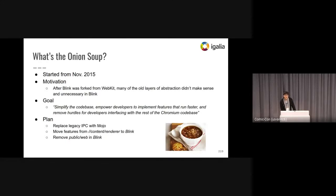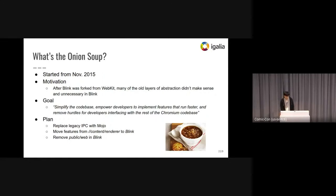Onion Soup started in November 2015. There are many old layers of abstraction which didn't make sense and were unnecessary in Blink after Blink was forked from WebKit. So Blink needs to make it simpler, as well as empowering developers to implement features easier and faster. The goal of Onion Soup is to remove the abstractions that prevent interfacing with the rest of Chromium. To achieve the goal, the project has planned to replace the legacy IPC with Mojo, move features from the content layer to Blink, and remove the public web API in Blink as much as possible.